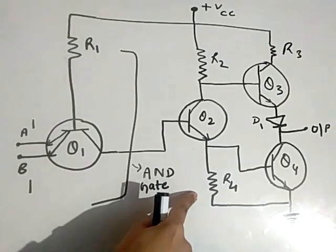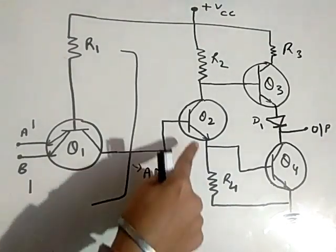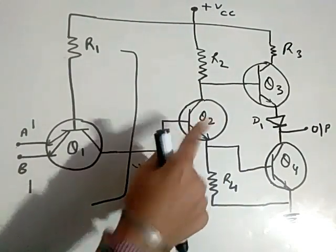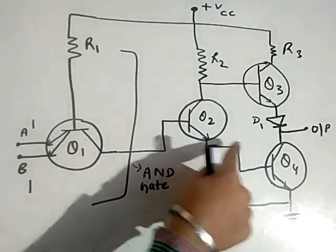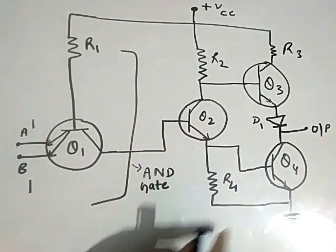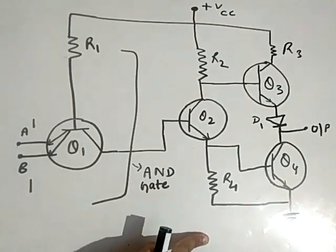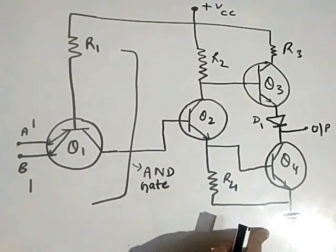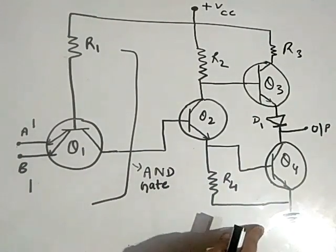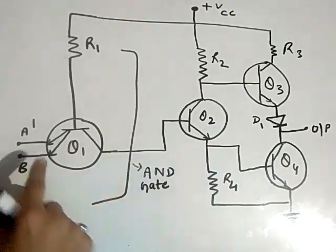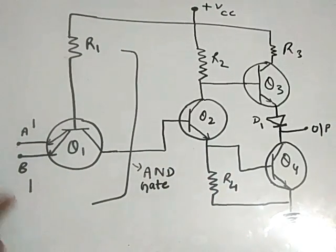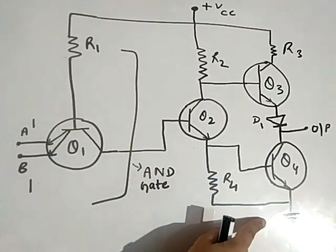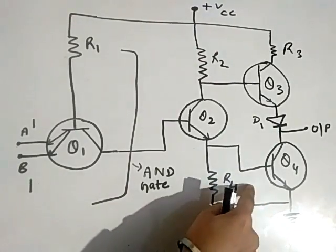R4 is here and there is a potential drop across it. When current flows, Q2 starts to conduct, and then current flows to Q4, which also starts to conduct. Q4 will be in saturation condition. Because the current goes totally to ground, there will be no current at the output. When we give input 1,1, the output will be 0, because the current goes to ground and Q4 is in saturation.